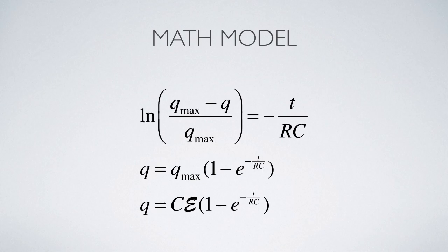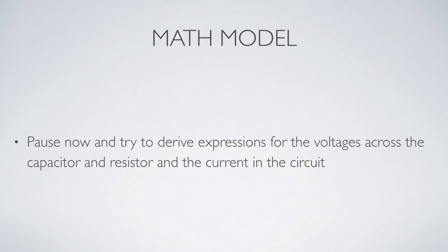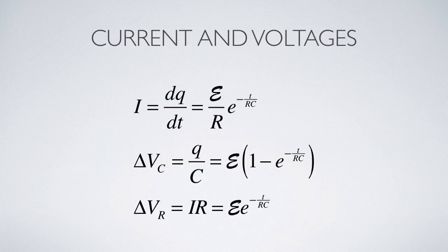This gives us only one expression for one variable. To find the current, we use the definition I = dQ/dt and differentiate the Q expression. This gives a decaying exponential function for the current, approaching an asymptote of zero from an initial value of E over R — both consistent with our earlier analysis.